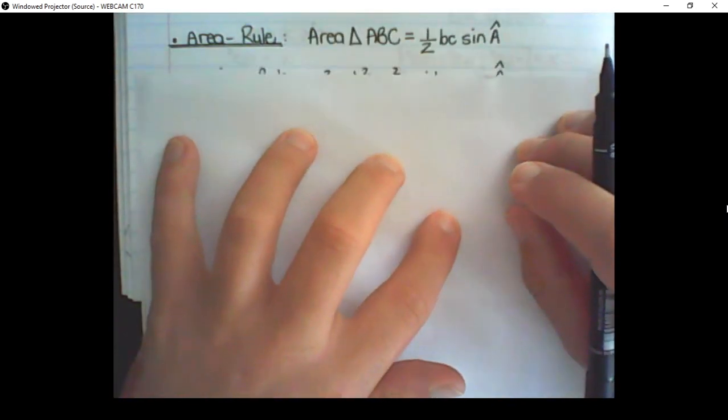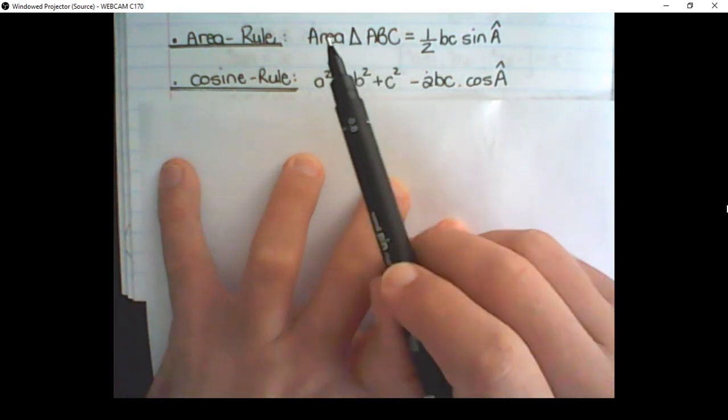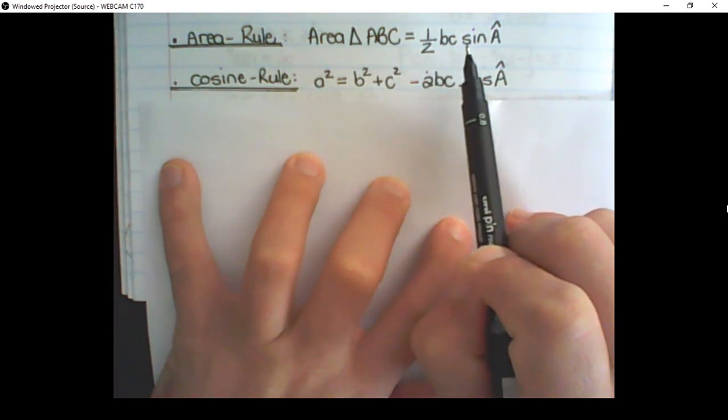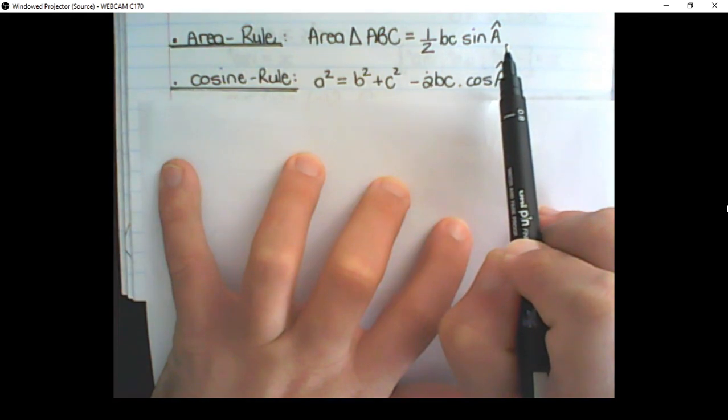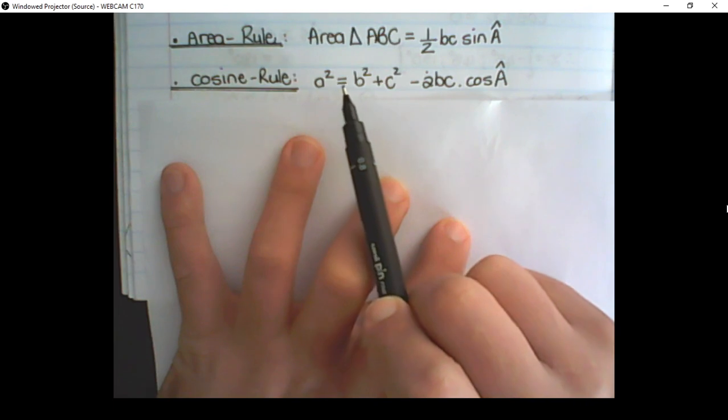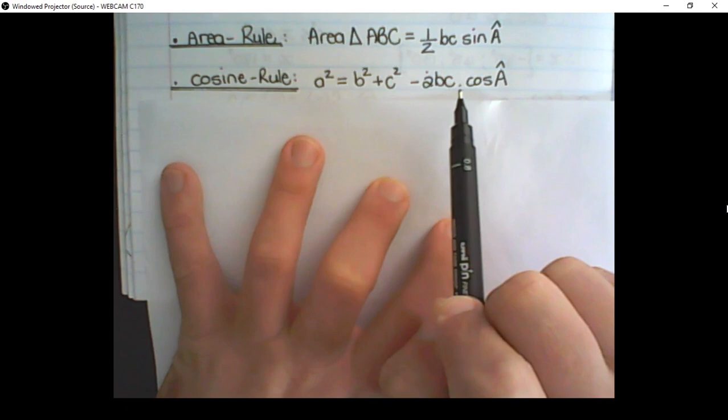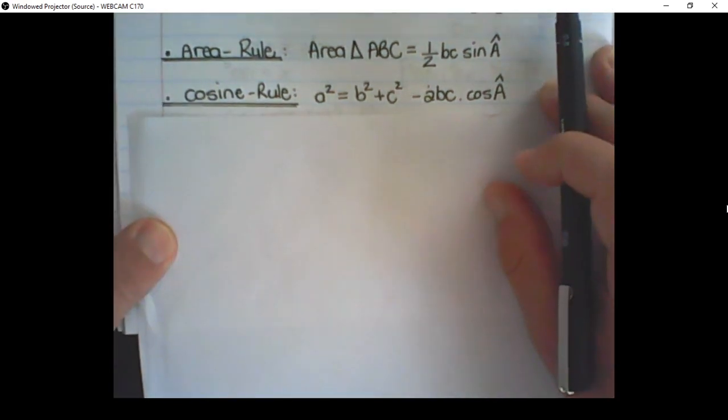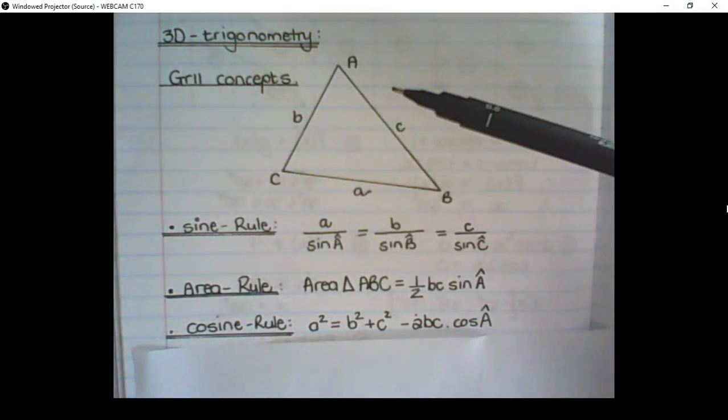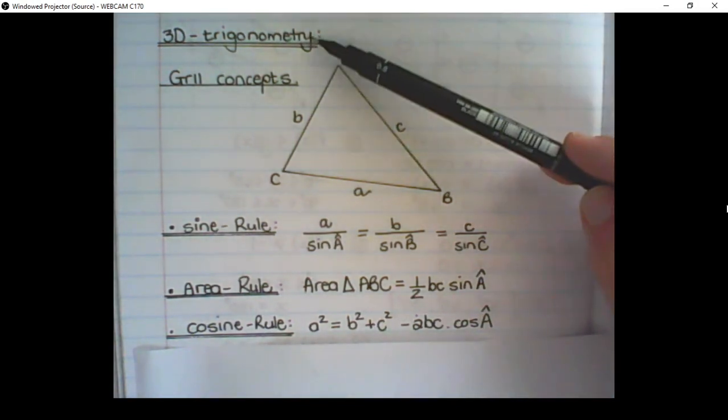Another concept from grade 11 is the area rule and the cosine rule. So the area rule said, the area of a triangle is half BC times sine of A. And the cosine rule, the length of A squared is equal to B squared plus C squared minus 2BC times the cos of A. And all of these rules we can apply on this triangle. And this is the theory from grade 11, which we will need to apply in 3D Trigonometry.